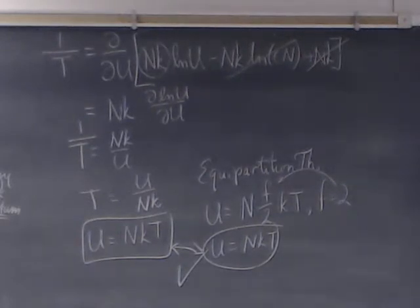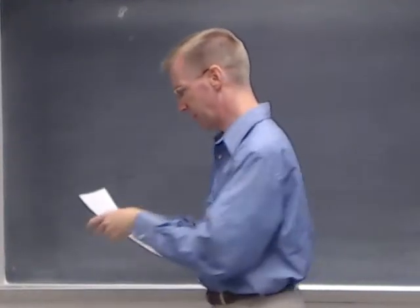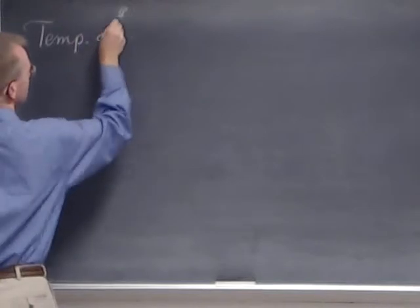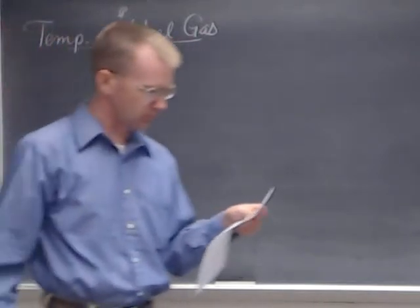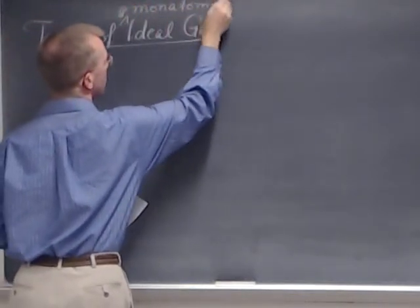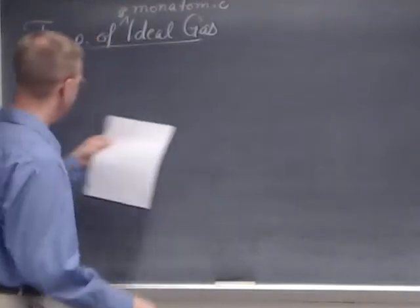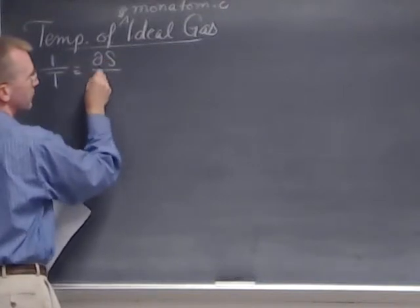Next, let's find the temperature of a monatomic ideal gas. I choose monatomic because it's easier. As before, recall that one over T equals the partial derivative of S with respect to U while number of particles and volume are held constant.